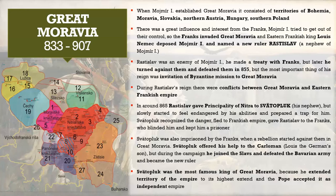The most important thing Rastislav did during his reign was the invitation of the Byzantine mission to Great Moravia — Cyril and Methodius, also known as Constantine and Methodius. Also during this period there were ongoing conflicts between Great Moravia and the Eastern Frankish Empire, because the Franks did not stop after their defeat in 855.